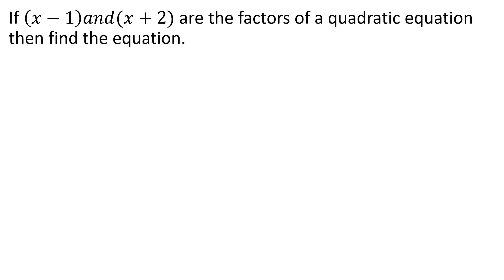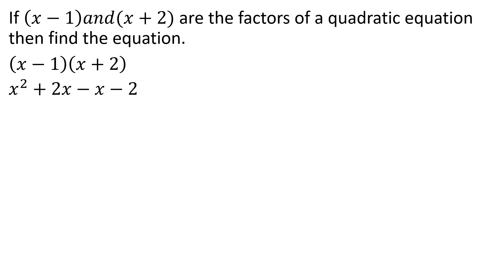If x minus 1 and x plus 2 are factors of a quadratic equation, find the equation. Since both are factors, the quadratic polynomial is (x minus 1)(x plus 2), which expands to x² + x - 2 equals 0.